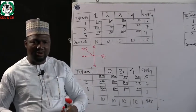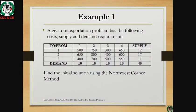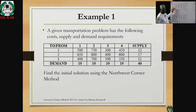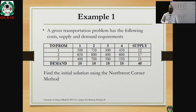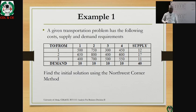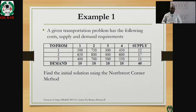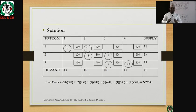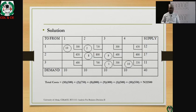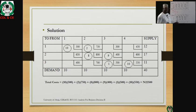Example one on the screen has been reproduced on the board for emphasis. We have destinations representing demand and supply. This is a balanced transportation problem because the supply column totals 40 while the demand column also totals 40. The question requires us to find the initial solution using the northwest corner rule. The next slide gives us the solution with a minimum cost of 22,500. Let's see how we arrive at that solution using the board.